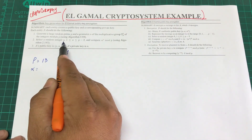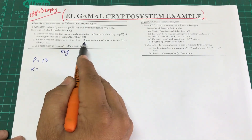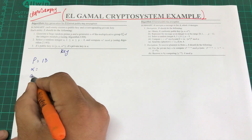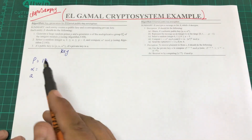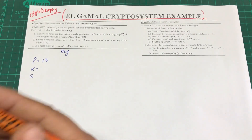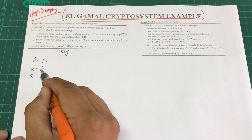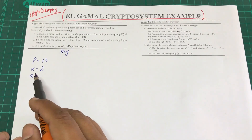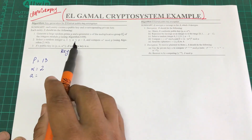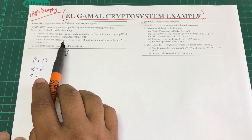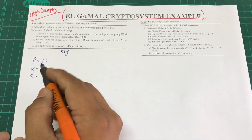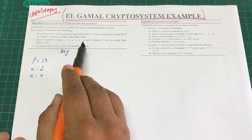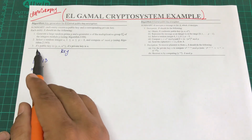Next, we select a random integer a, where the condition is 1 ≤ a ≤ p − 2. Since p = 13, that means 1 ≤ a ≤ 11. One primitive root of 13 is 2, so our generator α = 2. To make things easier, you can look up primitive roots or watch the video on this. Let's select the random integer a = 4.